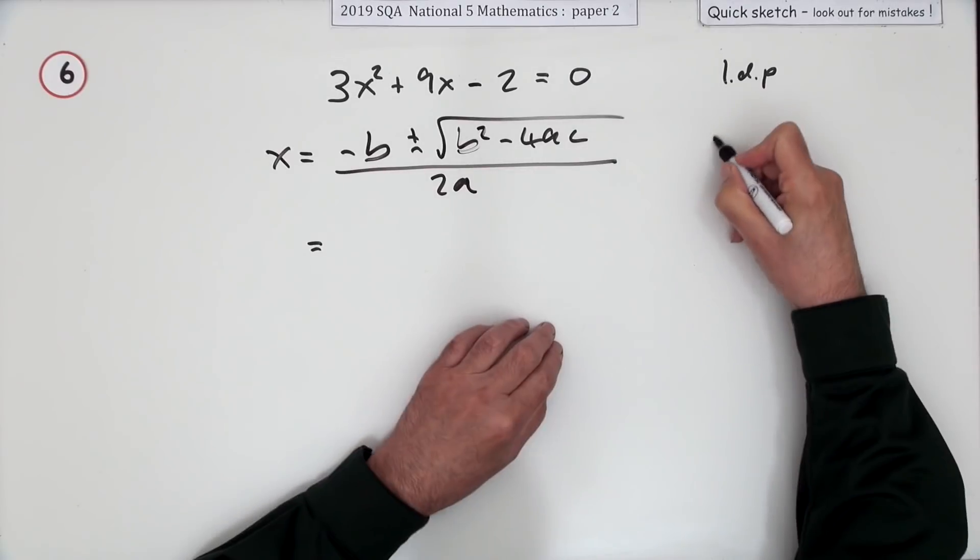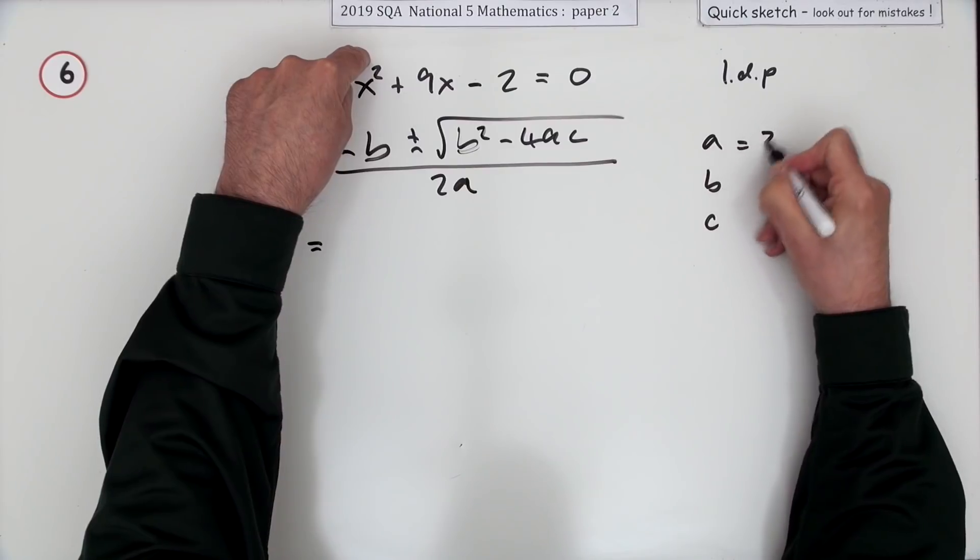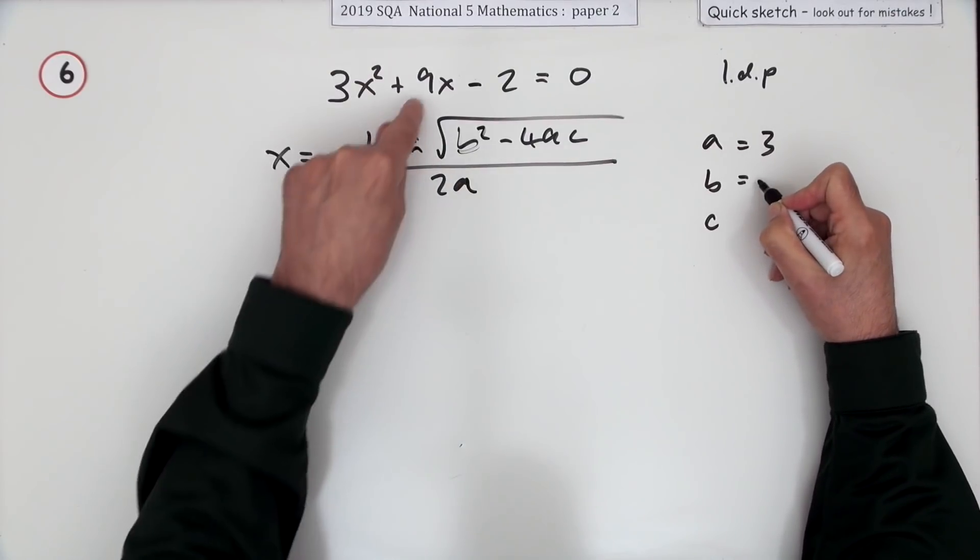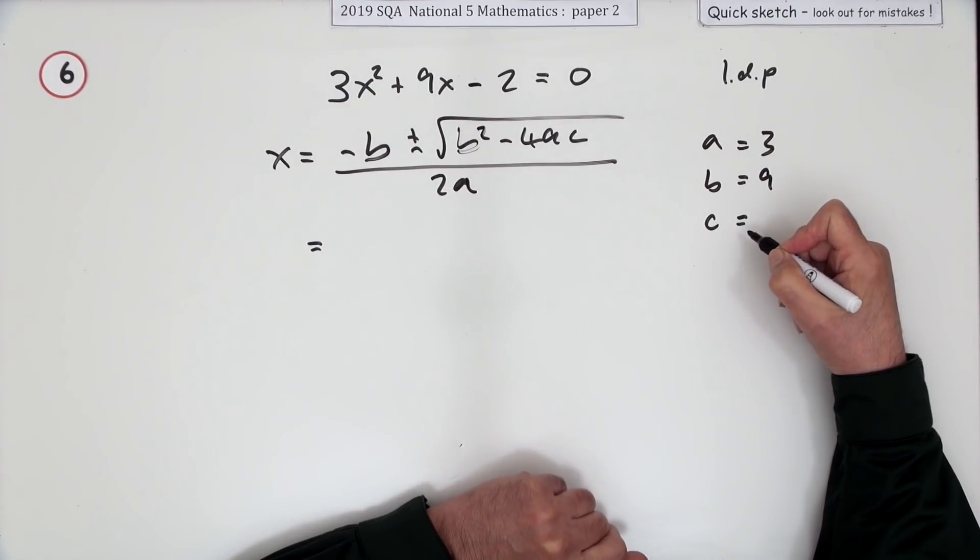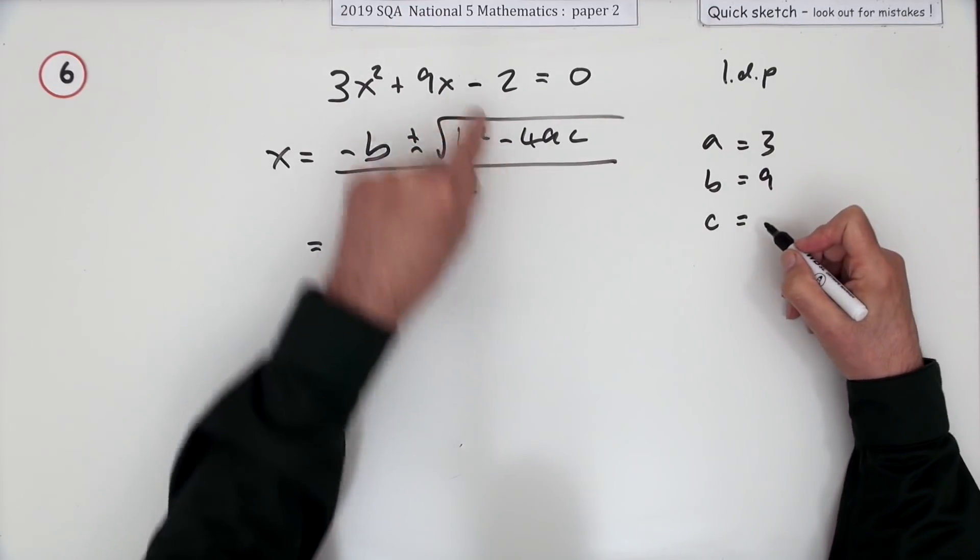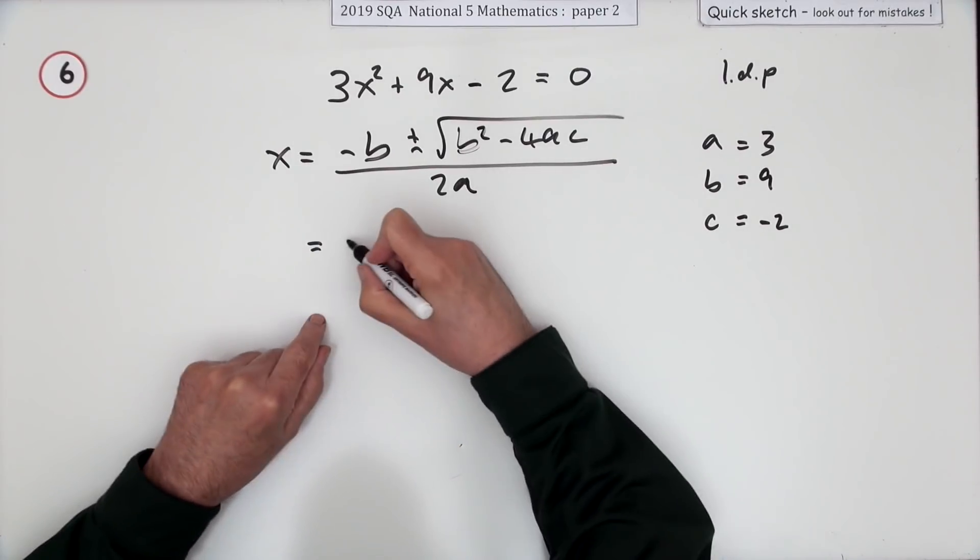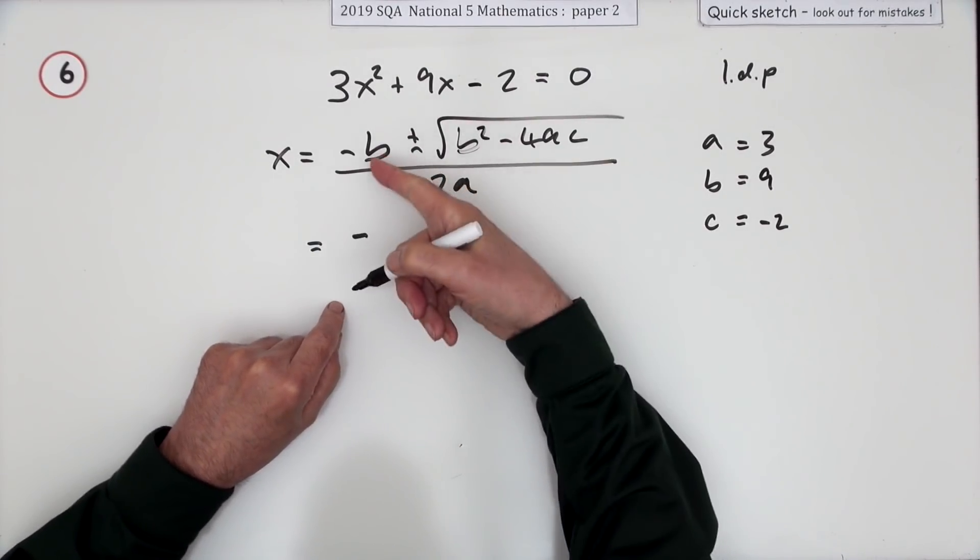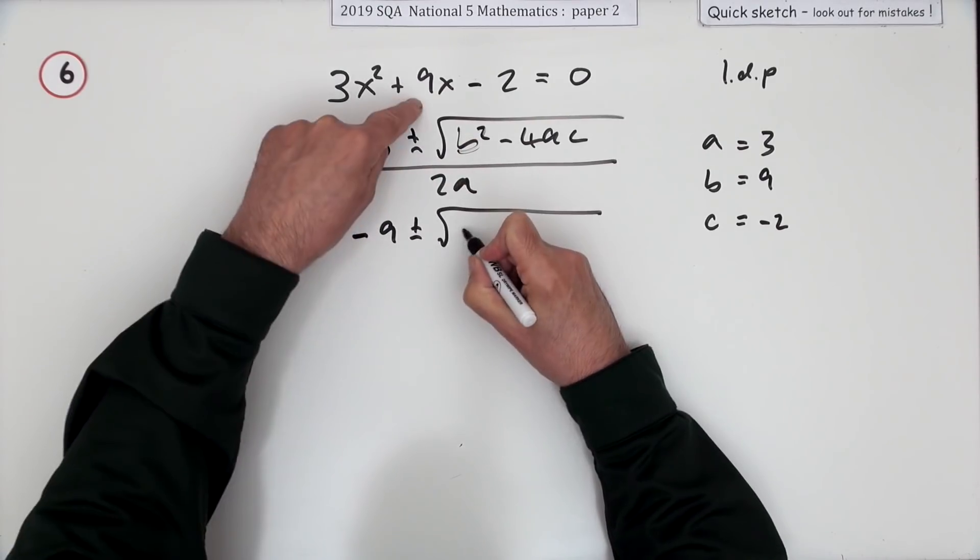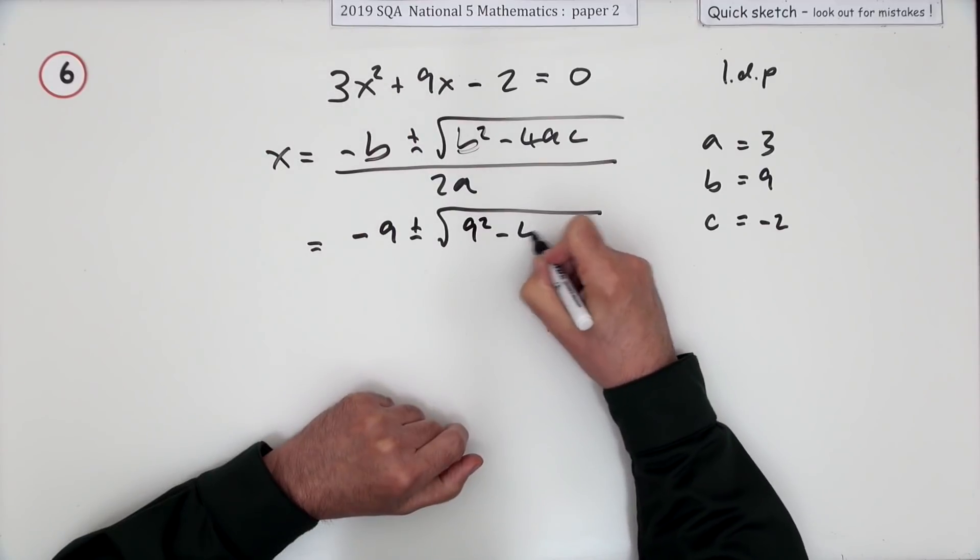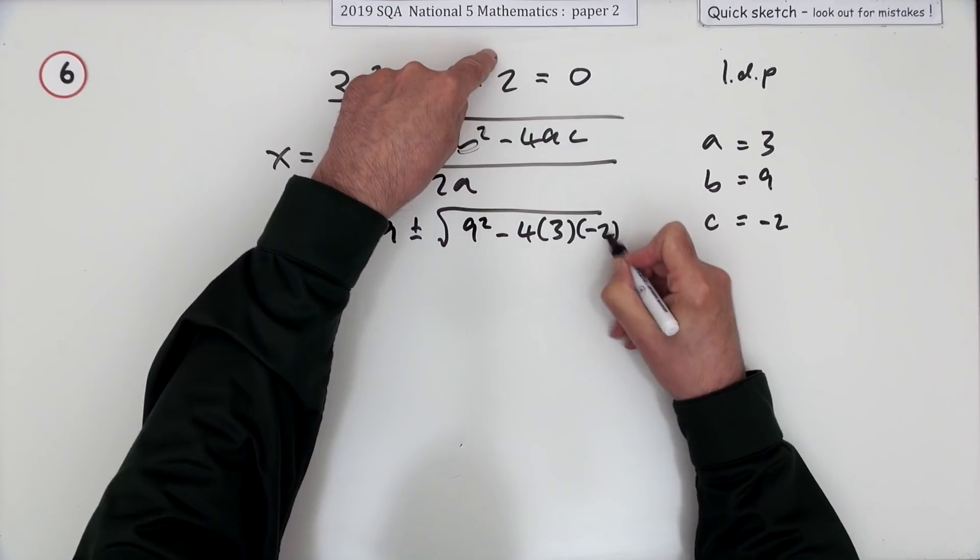Now you can write down those if you like: a is the coefficient of x squared, that'll be 3; b is the coefficient of x, that'll be 9; c is the constant at the end, also known as the absolute coefficient, that's negative 2. So watch out for that. Popping them in there, although I'm just going to look back at this again when I do it: negative b, so that's negative 9; b squared, so that's 9 squared; minus 4 times, and watch the signs here, 3 times, and that's a negative 2.